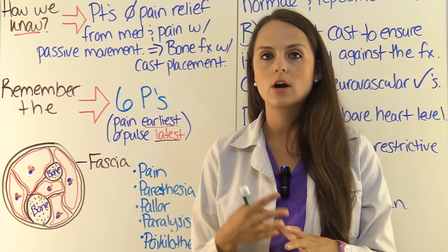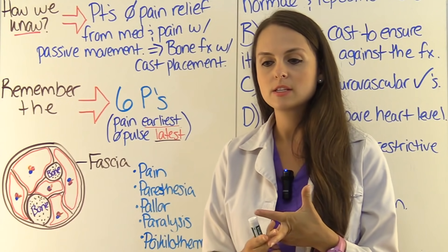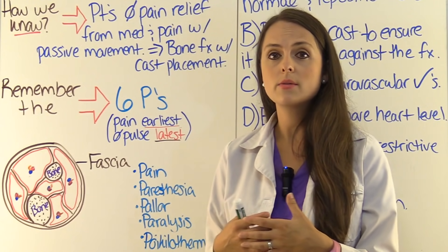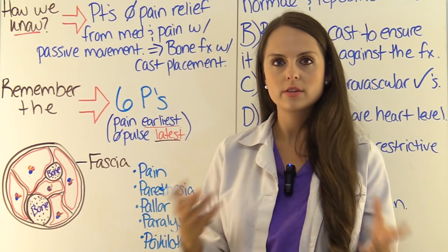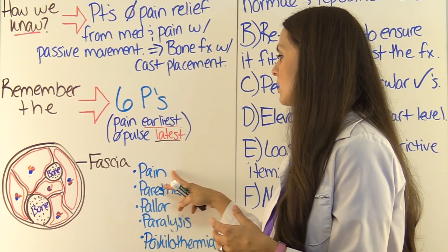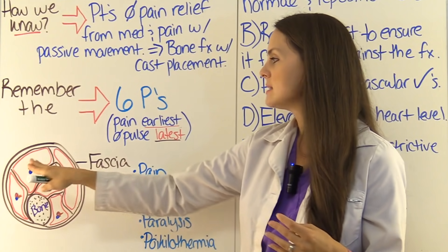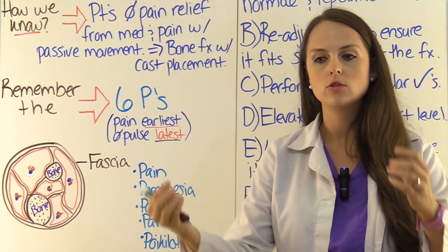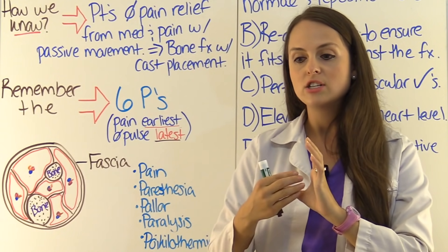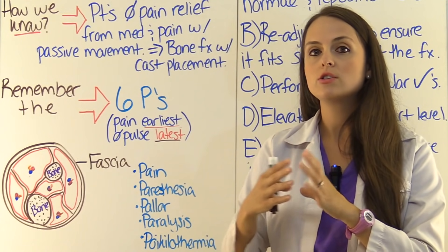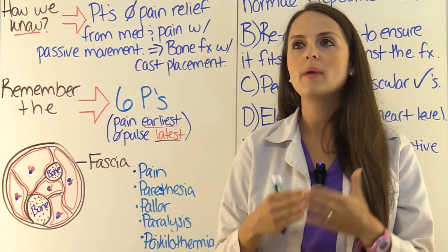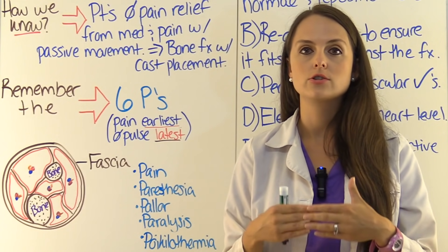Compartment syndrome can occur with fractures, with cast placements — which our patient has — and other external things like traction. It can also occur in burns, but for this lecture we'll concentrate on fractures. The reason for the pain is that there's increased pressure within the compartment putting a lot of pressure on those nerves. Just barely stretching the extremity is going to increase the pressure within that compartment and cause severe pain — more severe than what a normal bone fracture should feel like. If the patient is getting morphine and it's not taking the edge off, that's very alarming.